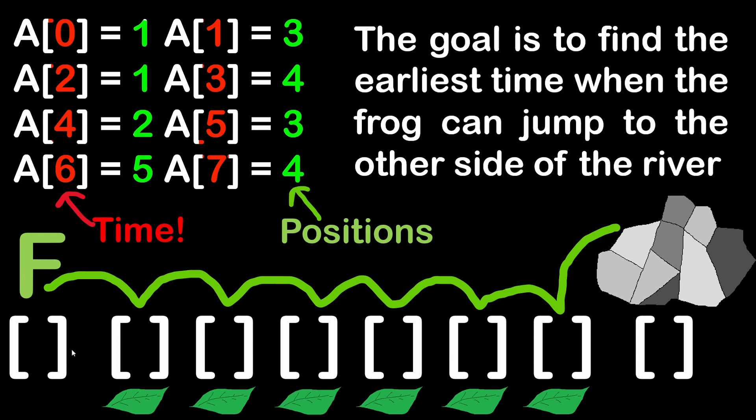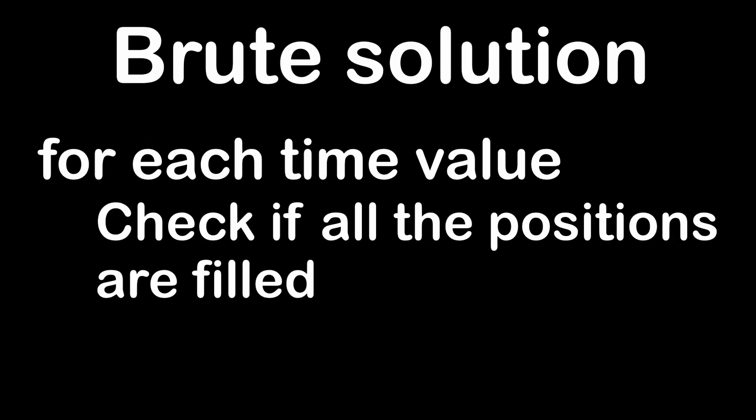Now let's see how to solve this with a brute solution, and then we will also see two more efficient solutions. With the brute approach, for each second we can check if all the positions are filled with leaves. But this means for each second we have to check all the elements of the array and confirm if all numbers between the frog's position and the river's side are filled. Although it's the easiest approach, it's not the most efficient — it involves reading the array more than a few times, which affects efficiency.